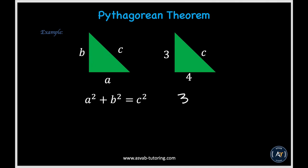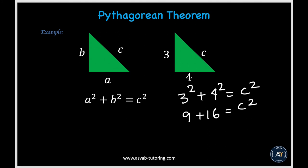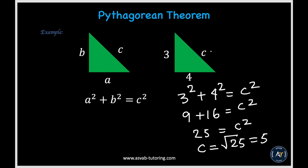Let's plug in the values: 3 squared plus 4 squared equals c squared. That gives you 9 plus 16 equals c squared, so 25 equals c squared. Therefore c equals the square root of 25, which is 5.